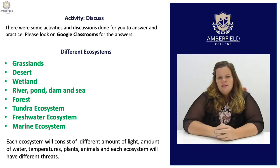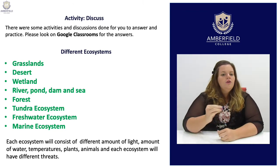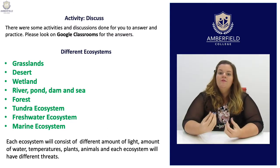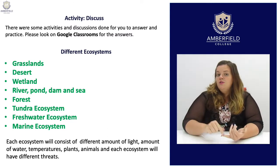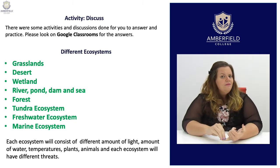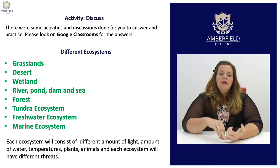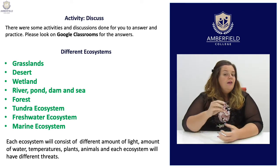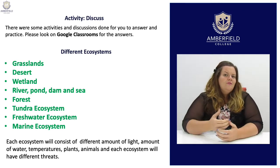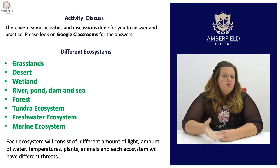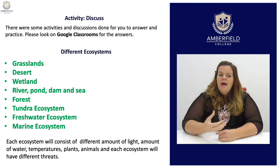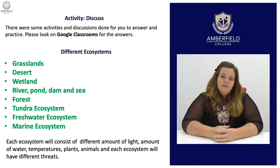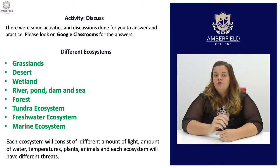What I want you to understand is that in every ecosystem, they consist of different things. There is a different amount of light in each ecosystem, a different amount of water, every ecosystem has a different type of temperature, different plants, different animals, and each ecosystem has different threats. This is very important for us to know.